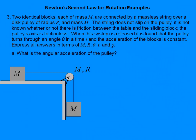Great example number three: we've got a modified Atwood's machine. Two equal masses — one on the track, one hanging. There's a pulley, but unlike the modified Atwood's machines used in class, this pulley is not light and frictionless. This pulley has a mass and a radius r.